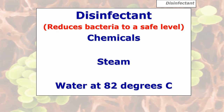A disinfectant reduces bacteria to a safe level. It doesn't kill all bacteria at 100% — it kills 99.9% because some will unfortunately survive, but not very many. You can use chemicals such as bleaches. I prefer not to use chemicals. You can use steam, which is water above 100 degrees C, or water at 82 degrees C, which is classed as a disinfectant. That's the ideal disinfectant because it's not chemical-based, it's not going to taint, and it acts as its own flushing liquid.